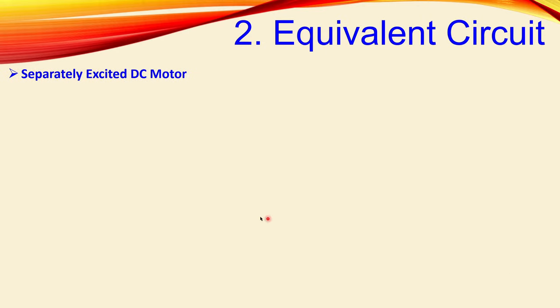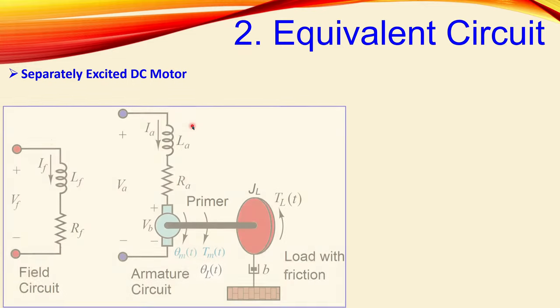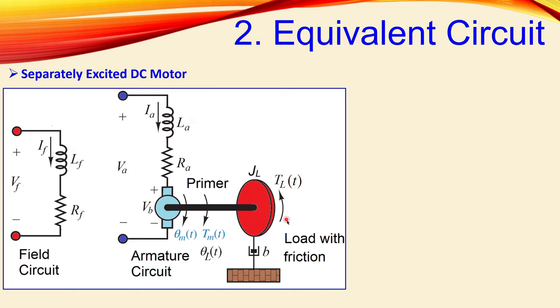Now let's look at the equivalent circuit — specifically the separately excited DC motor, as there are several configurations such as series, shunt, and others. This is the complete model of the separately excited DC motor. We have the field circuit composed of field inductance L_f and field resistance R_f, and the armature circuit composed of armature inductance L_a and armature resistance R_a. There is also the part that is rotating — the conversion from the electrical to the magnetic domain — with applied voltages V_f and V_a.